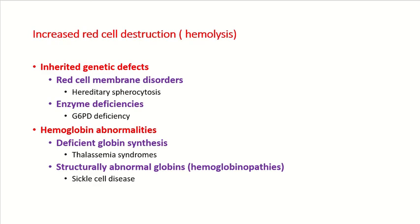Anemia is defined as decreased hemoglobin concentration according to age, sex, or any special condition. There are two main causes: one is increased destruction of RBCs, which is known as hemolytic anemia or hemolysis; and number two is decreased production of RBCs.